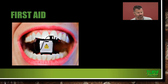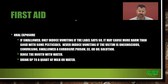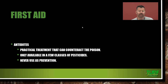First aid for mouth/ingestion exposure: if swallowed, only induce vomiting if the label says so — with some pesticides, vomiting may cause more harm than good. Never induce vomiting if the victim is unconscious, convulsing, or swallowed a corrosive poison or emulsifiable concentrate. Rinse the mouth with water and then drink up to a quart of milk or water. Antidotes are a practical treatment that can counteract the poison but are only available for a few classes of pesticides — never use them as a prevention.